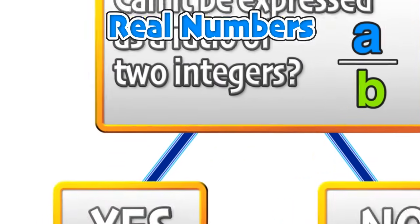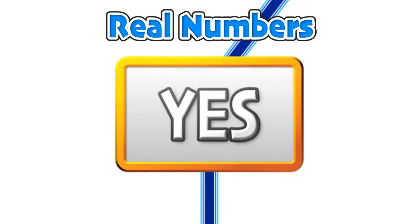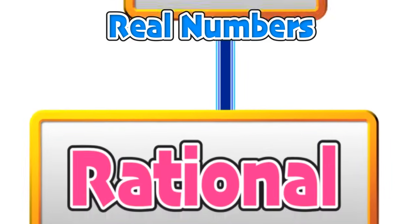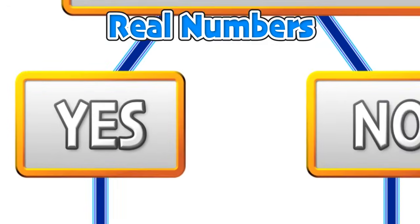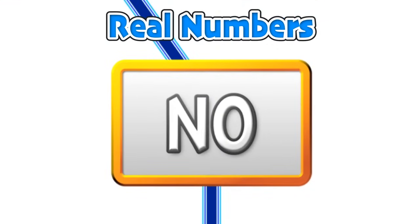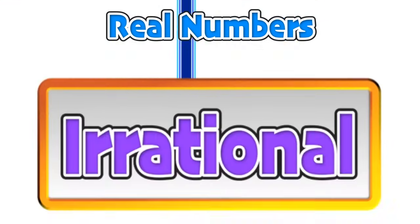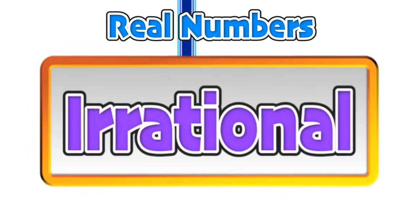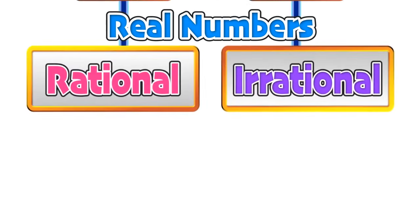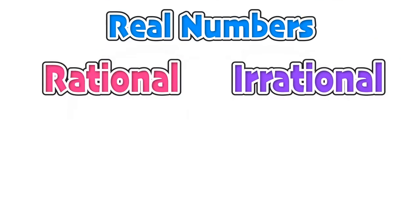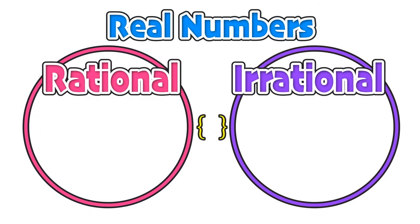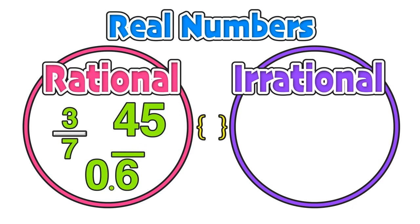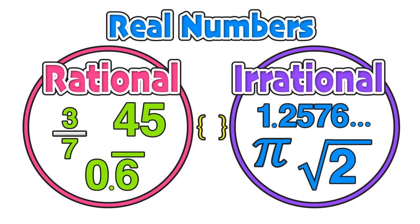If the answer to that question is yes, then we can conclude that the number is rational. However, if the answer is no, then we can conclude that the number is irrational. We can also note that any real number must be either rational or irrational — a number cannot be both or neither.